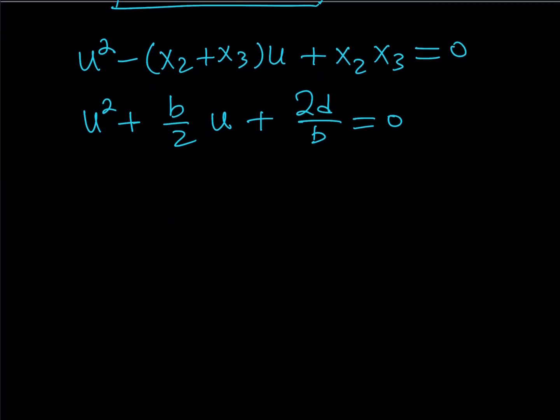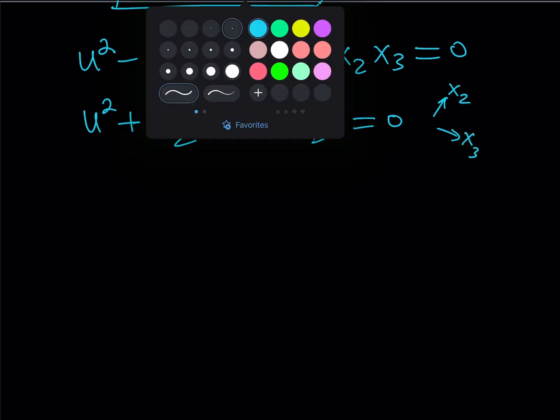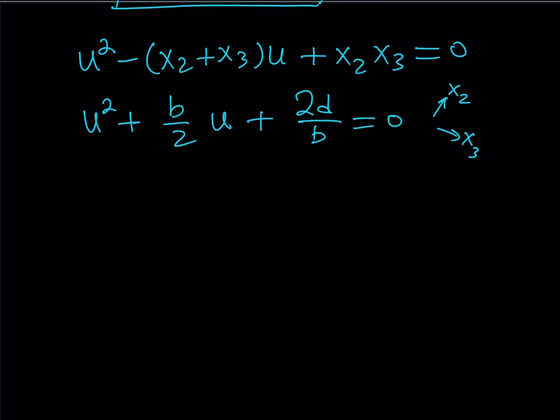Plus x2*x3 is going to be 2d over b and the whole thing is equal to 0. So if you solve this equation, the roots are going to be x2 and x3. We're going to find them in terms of b and d because that's our goal to find all the solutions of the cubic which are x1, x2, and x3. Now what am I going to do next? Solve this equation. This is quadratic, easy.